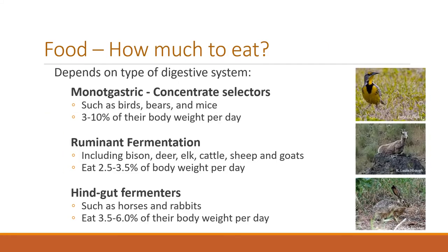Assessing habitat quality also requires that there's plenty of forage for animals to meet their intake demand. To summarize: monogastrics or concentrate selectors like birds, bears, and mice eat 3–10% of their body weight per day depending on the type of animal. Ruminants — including bison, deer, elk, cattle, sheep, and goats — eat 2.5–3.5% of their body weight per day on an annual basis. Hindgut fermenters like horses and rabbits eat 3.5–6% of their body weight per day. So when looking at habitat features, you need to look at how much forage is there to meet those intake demands.